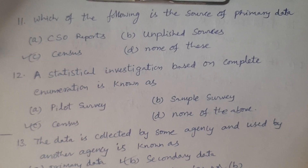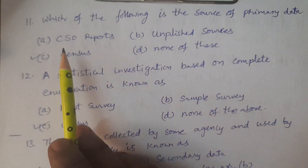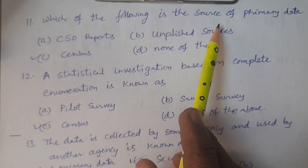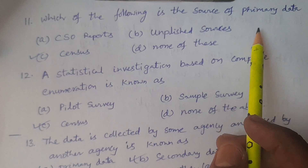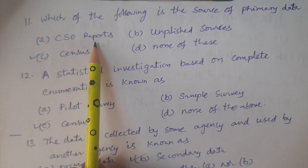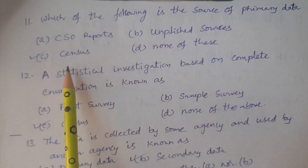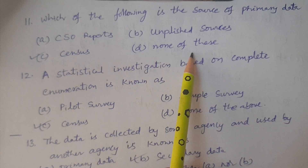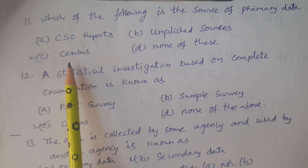See here, 11th bit: Which of the following is a source of primary data? Options: A. CSO reports, B. Unpublished sources, C. Census, D. None of these. The answer is Census. Census is the best source of primary data in our country.